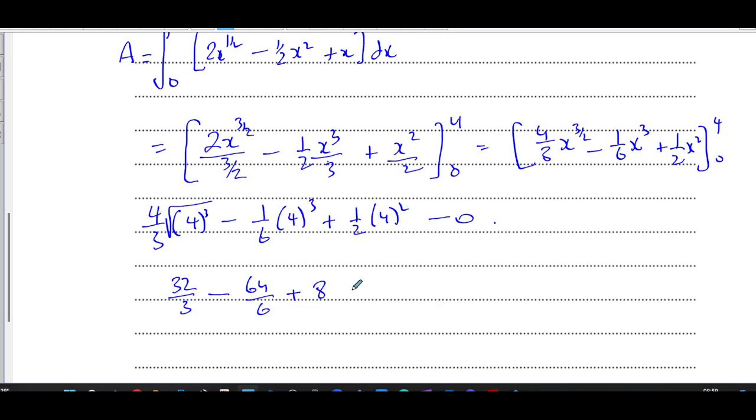This gives you 32 over 3 minus 32 over 3, which is zero, plus 8. So you're left with 8. So this is your answer: 8 square units. That's the area of this region.